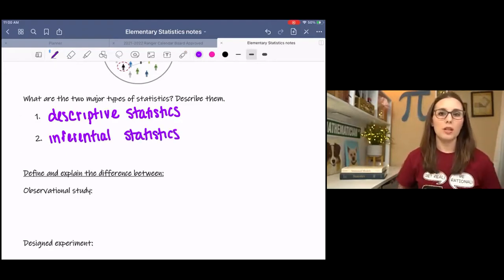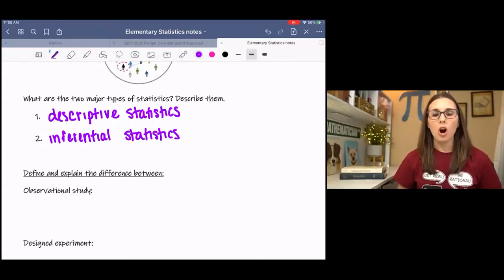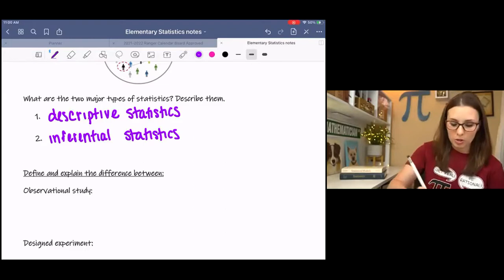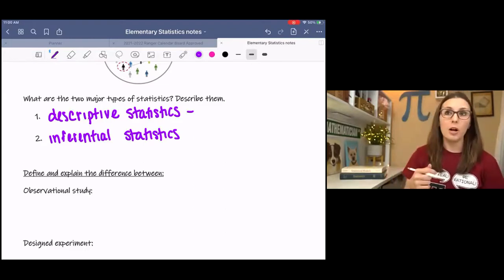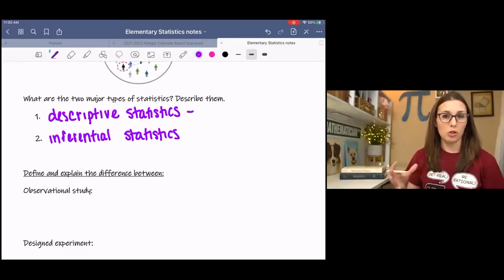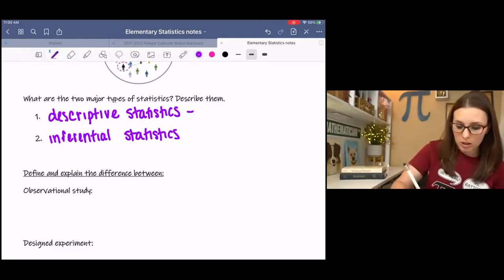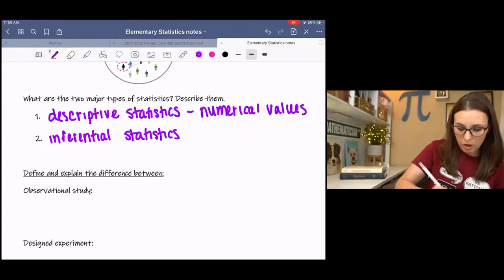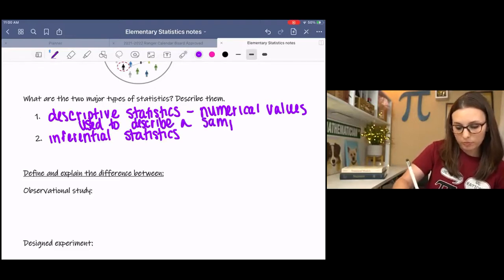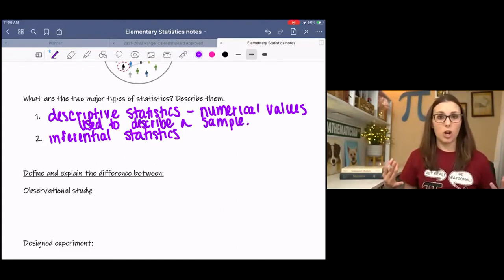And the difference between these two is, it's kind of common sense from the name, but descriptive statistics are only used to describe a sample. So these are normally numbers. When we say descriptive statistics, those are usually referring to numbers like mean, median, mode, standard deviation. So these are numerical values used to describe, which makes sense, a sample. So they're just numbers that are describing the sample that we pulled.